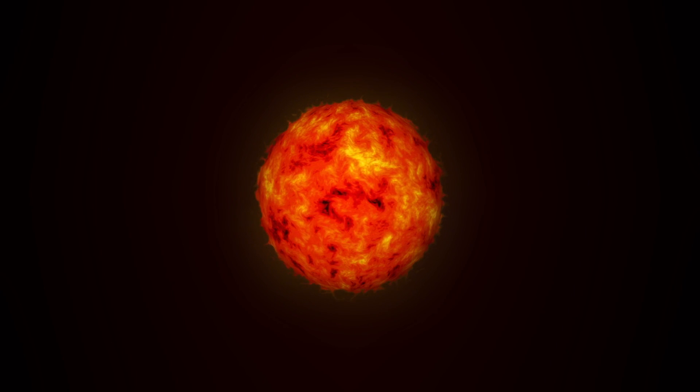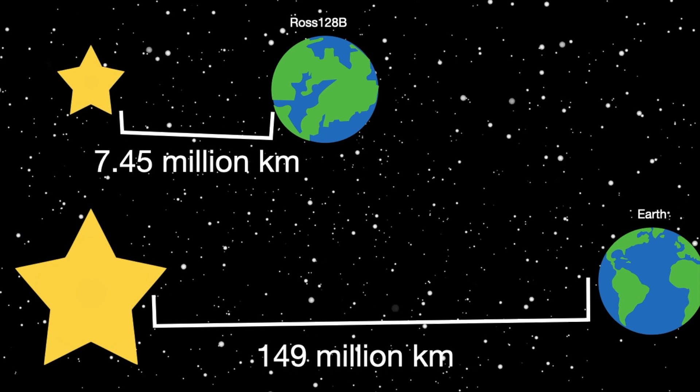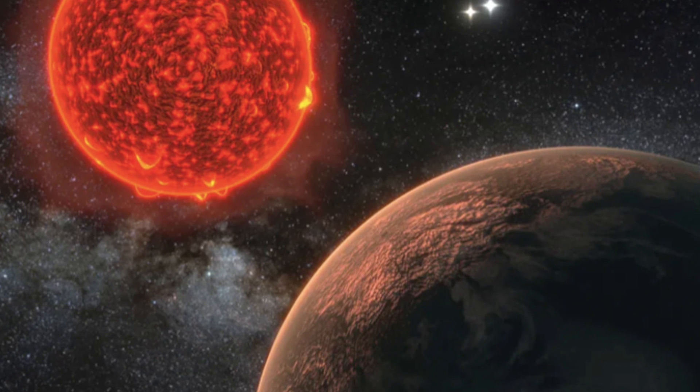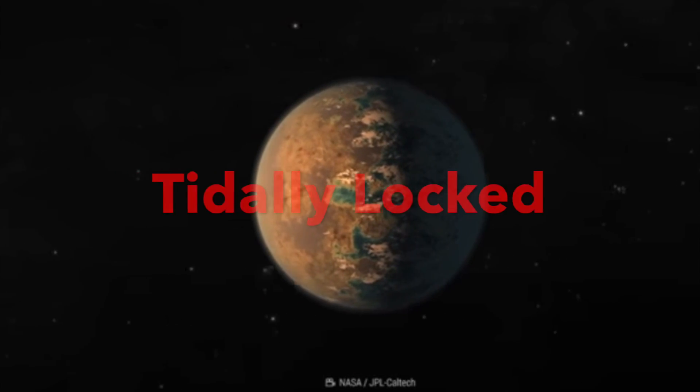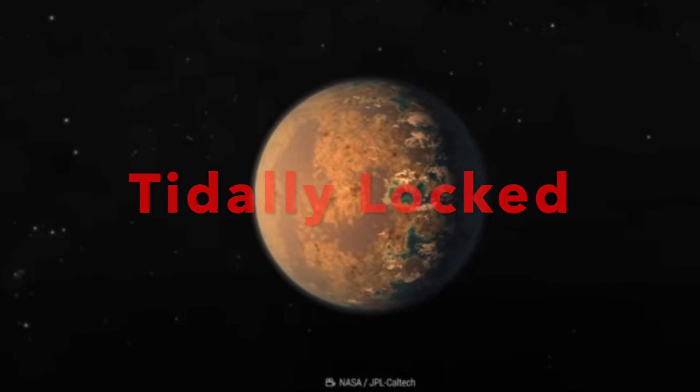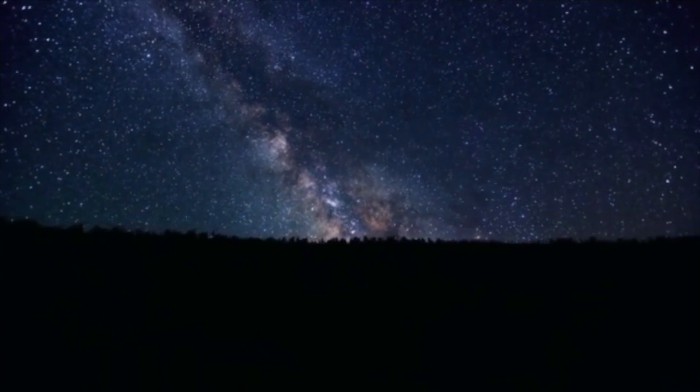Since Ross 128 is so dim, Ross 128 b orbits about 20 times closer to its star. At this close distance, the red dwarf's gravity is so strong that it is most likely that Ross 128 b is tidally locked. This means that on one side, there is eternal daylight, while the other is in eternal darkness.